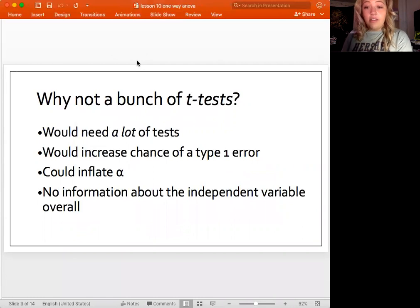The reason being is we would need a lot of tests for this, and it would increase the chance of a type 1 error. That next bullet can influence or inflate alpha. It could really increase that because remember alpha is the chance of a type 1 error. And overall, we're not going to get information about the independent variable. It doesn't really give us what we need.